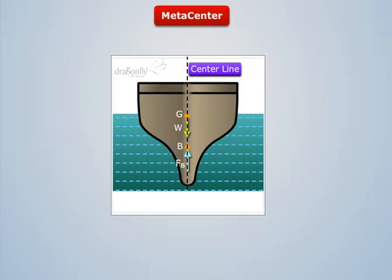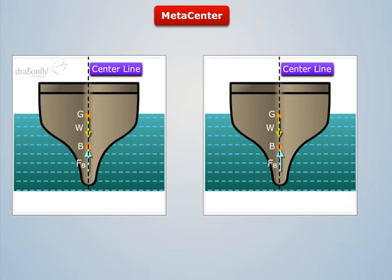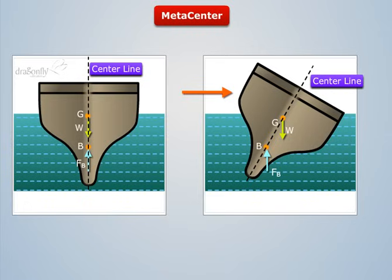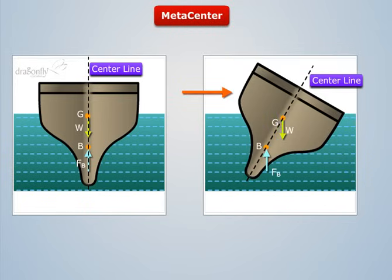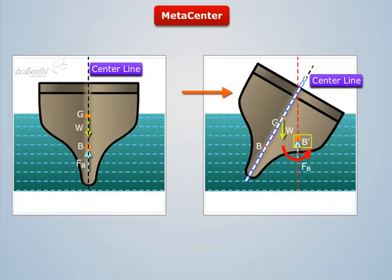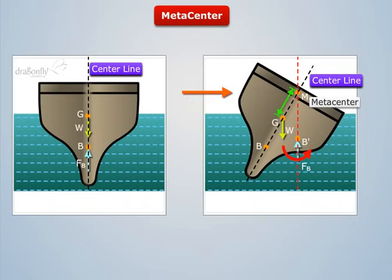Now, if a body undergoes an angular displacement, say in the rightward direction, then we see that the volume displaced is larger on the right side. Thus, the center of buoyancy shifts towards the right from B to B', and a couple is formed which tries to rotate the body. The point of intersection of the vertical line through the new center of buoyancy, B', and the center line, BG, is termed as the metacenter of the body. The distance by which the metacenter lies above the center of gravity of a floating body is known as the metacentric height, GM.